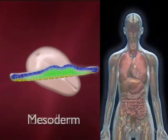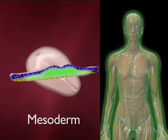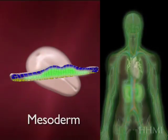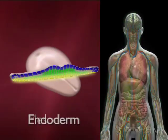The middle part, the mesoderm — shown in green here — gives rise to the muscle, including the kidneys and the heart.